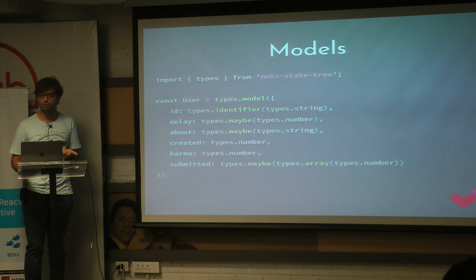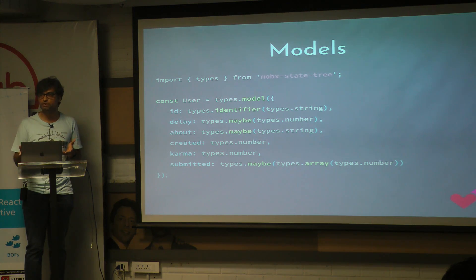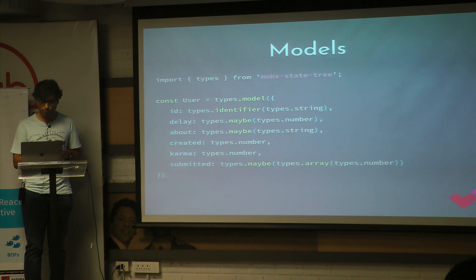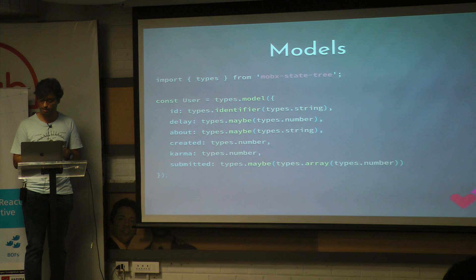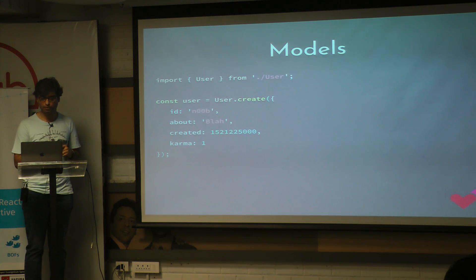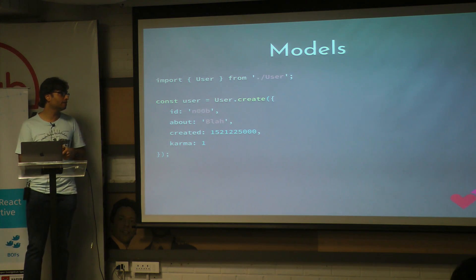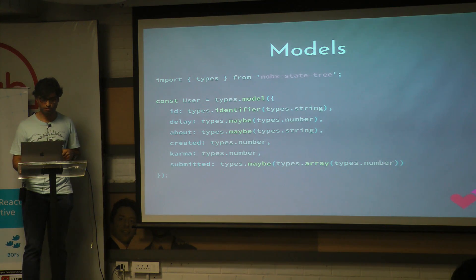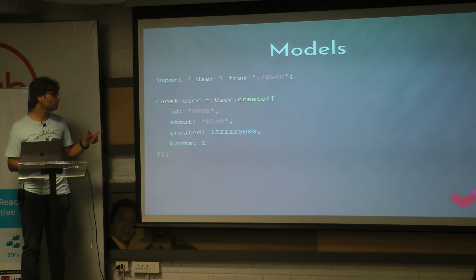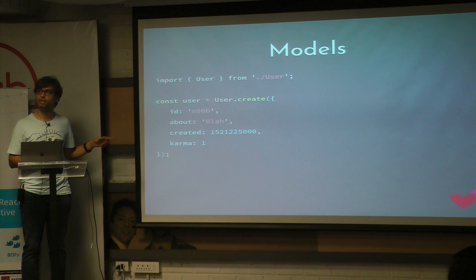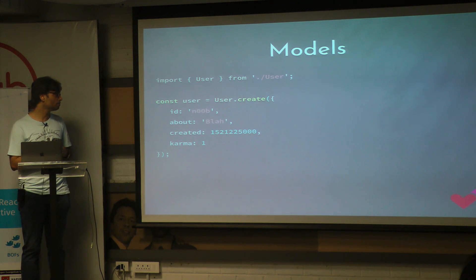All of this gives you proper static and runtime validation. So if you were to create an instance of the user model, you can do it this way. If you left out any required properties that you hadn't marked as optional or maybe in the original model definition, it would error out at the time of creating the model instance.